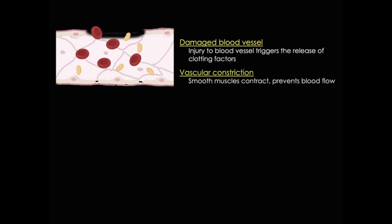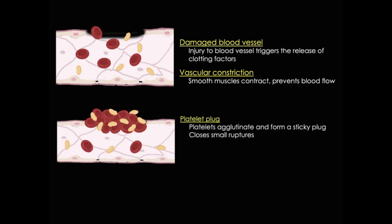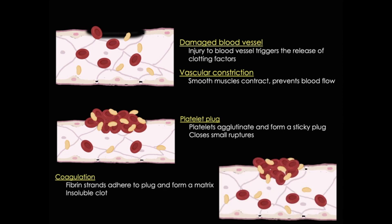First we see damage to a blood vessel, which will release clotting factors. At the same time, the smooth muscle of the blood vessel will contract to prevent blood flow. Platelets will bind to collagen, stick together or agglutinate, and this forms a sticky plug. The sticky plug alone can plug small holes or ruptures. The bound platelets can become activated and promote blood clotting reactions, giving rise to a fibrin polymer that forms a 3D network or matrix. That matrix will trap red blood cells, more platelets, and other cells — and this clot will protect the underlying tissues so they can be restored, after which the clot can be removed.